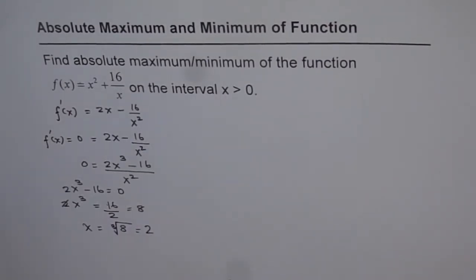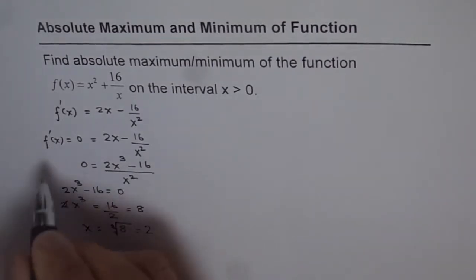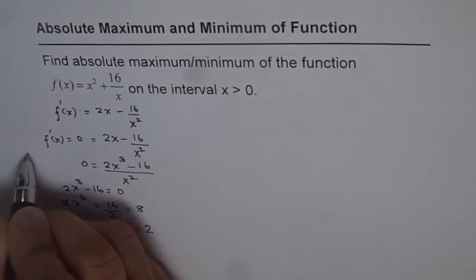So we have a critical number, which is x = 2. That's the critical number. This step was done to find the critical number.